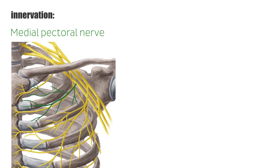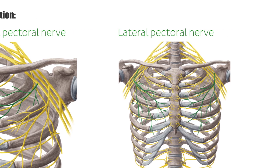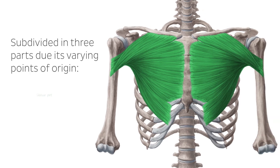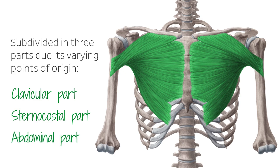The innervation is carried by the medial and lateral pectoral nerves, direct branches of the brachial plexus. The muscle is subdivided into three parts due to its varying points of origin: the clavicular part originates at the medial half of the clavicle, the sternocostal part from the sternum and second to seventh costal cartilages, and the abdominal part in the anterior layer of the rectus sheath.